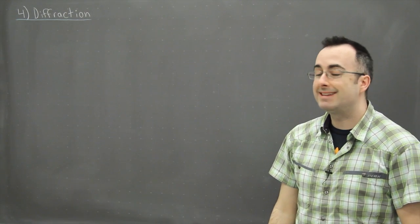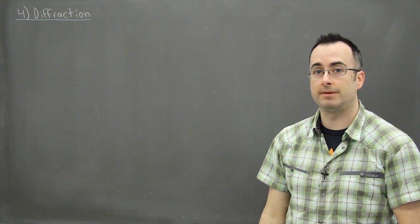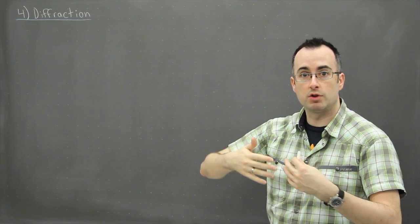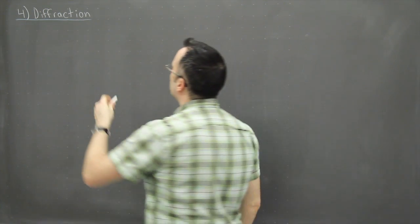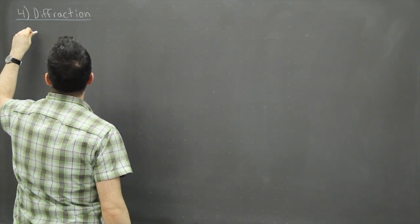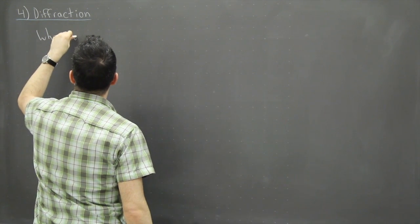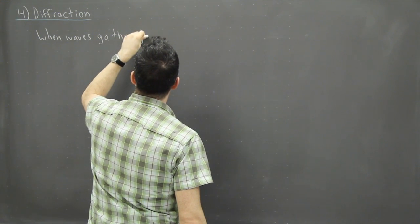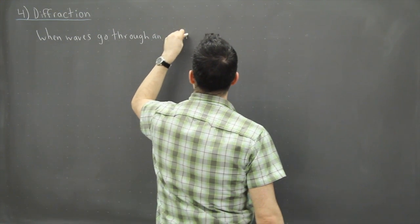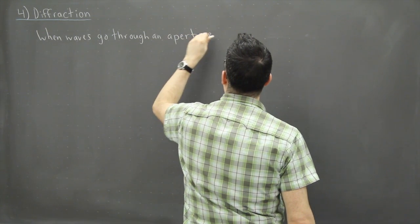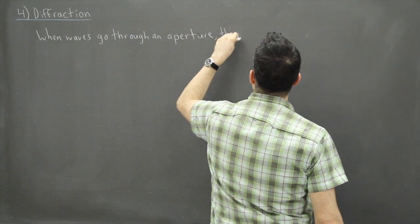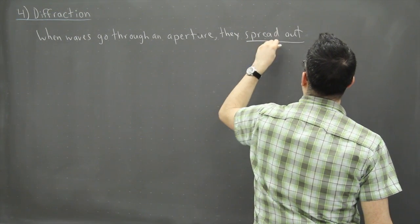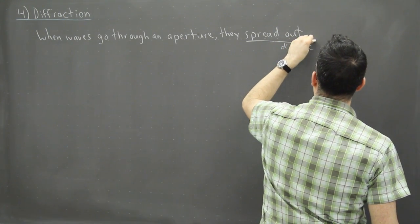An important property of waves is something called diffraction. Diffraction is all about the spreading out of waves when they go through some sort of hole or aperture. So diffraction is when waves go through an aperture — an aperture just means a hole of some kind — they spread out. That spreading out is the diffraction.